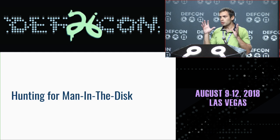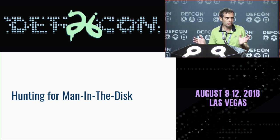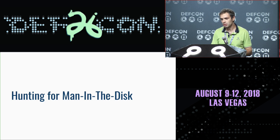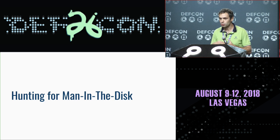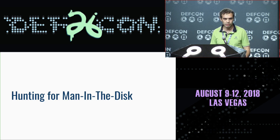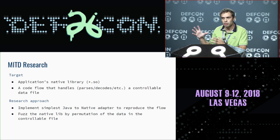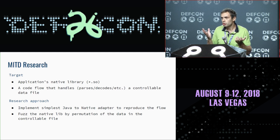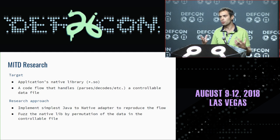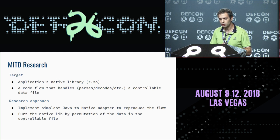Let's look at how to find Man-in-the-Disk vulnerabilities. When first approaching this problem, I was surprised that very little work in this field exists and I could not find any automation tool to help with my investigation, so my decision was to prepare my own setup. The research target is the application native library — a .so file — because I'm going to crash C code, not Java. If such a library handles in any way a controllable file, that application can be attacked. In our case, the controllable file is the file located in external storage.